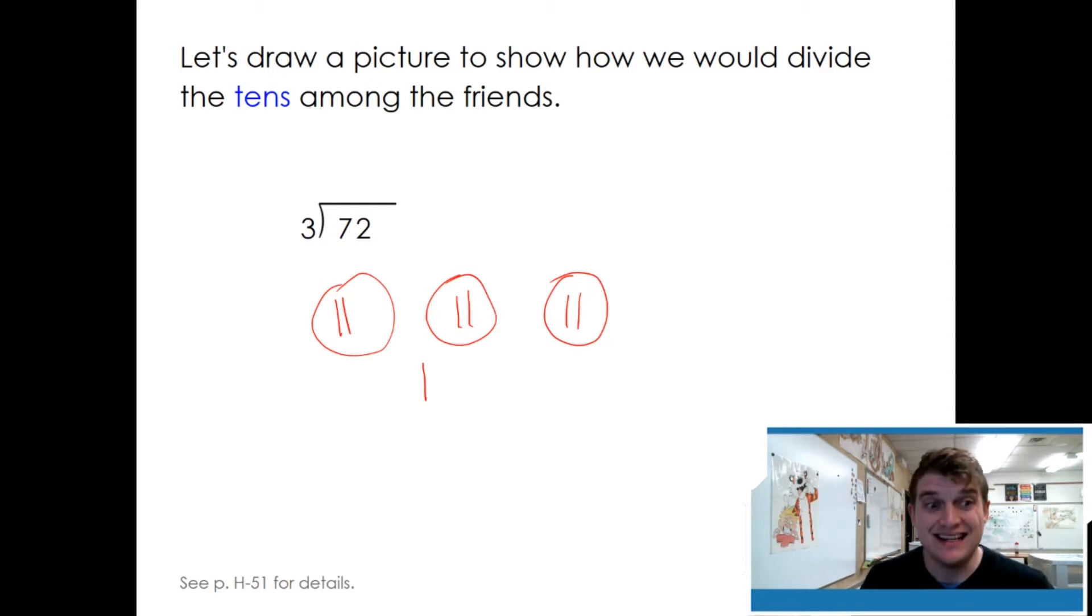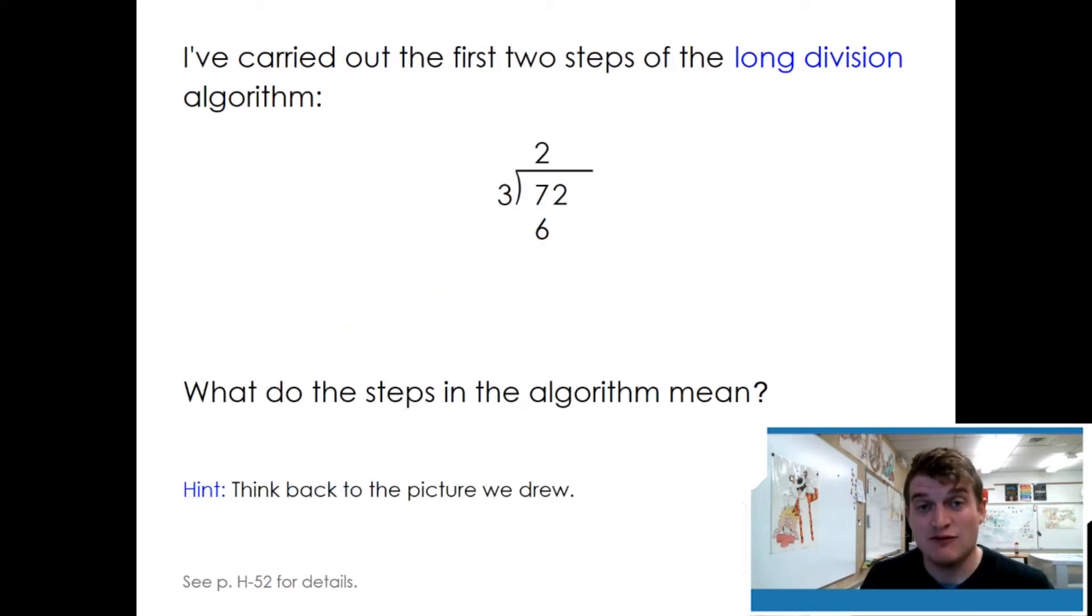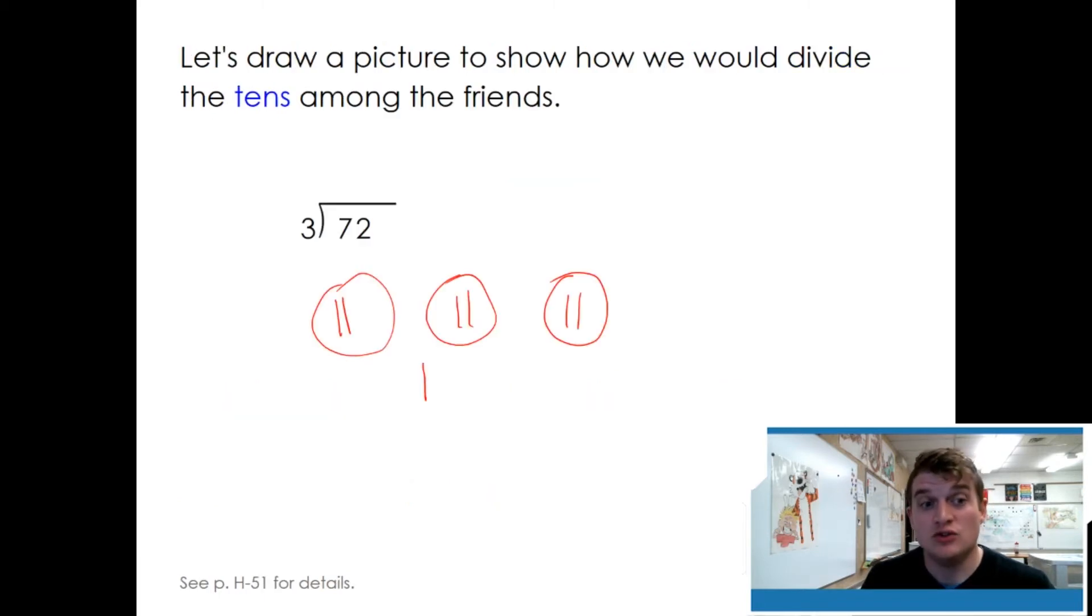Well, where did the six come from? The six came from how many tens we were able to share. If you look, two, four, six tens were shared equally.